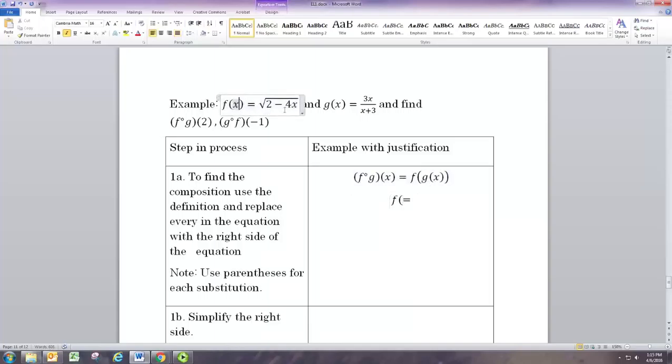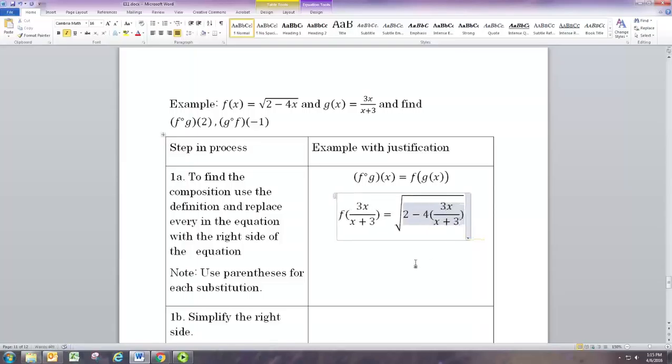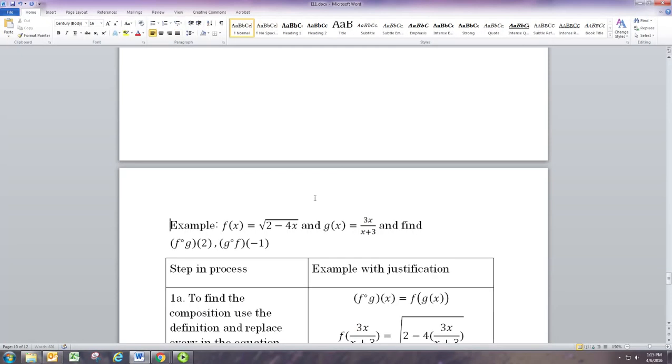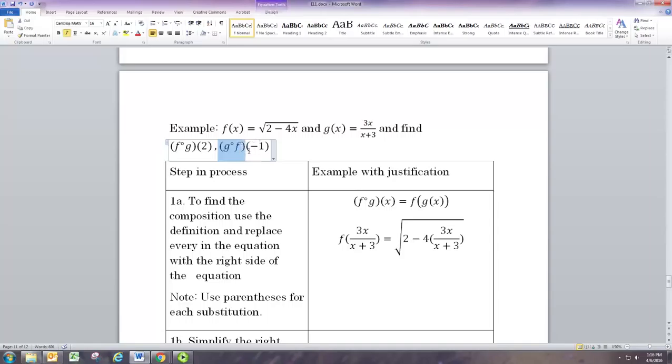So in our second example, we have more complicated functions. f is going to be a radical or square root function. And g of x is going to be a rational function. And we want to know what the value of the compositions are at certain x values. So we're going to find the composition function first and then evaluate it. So we're going to replace the input for f, which is the x in this equation, with the output for g, which is 3x over x plus 3. Let's put that in there.